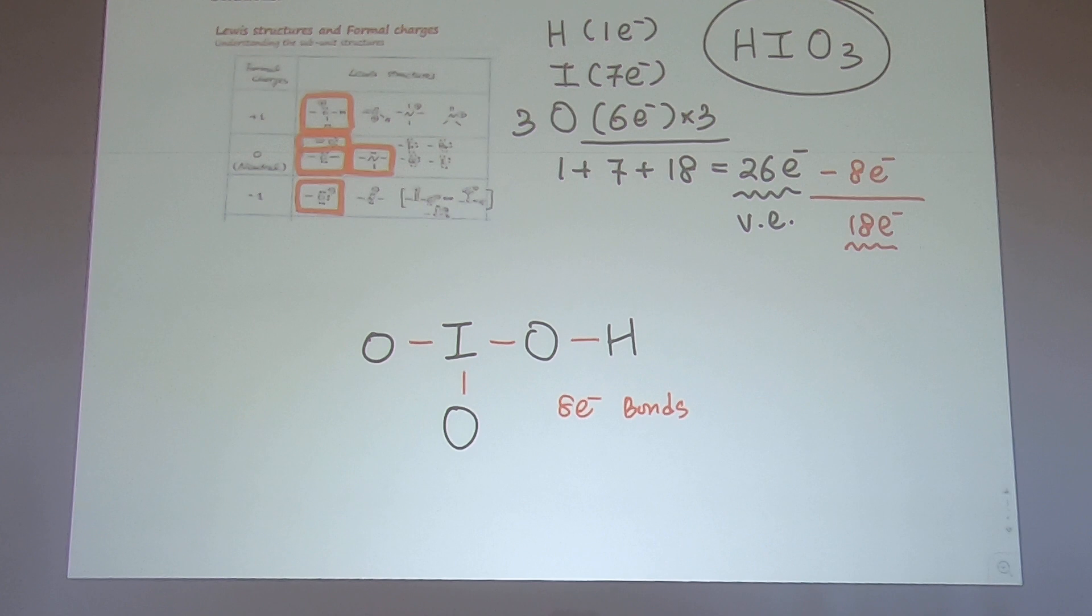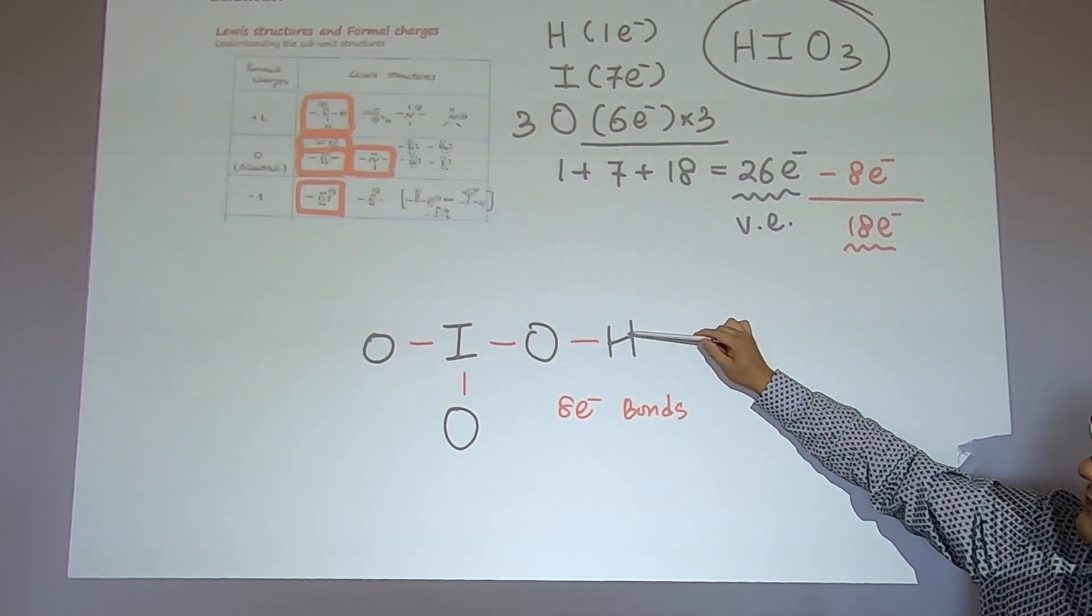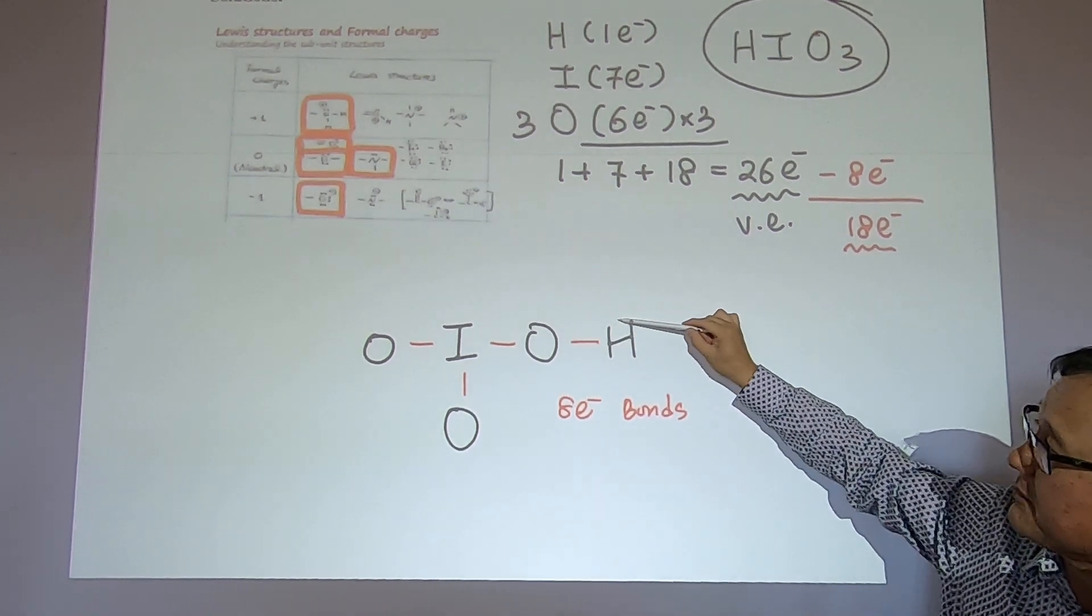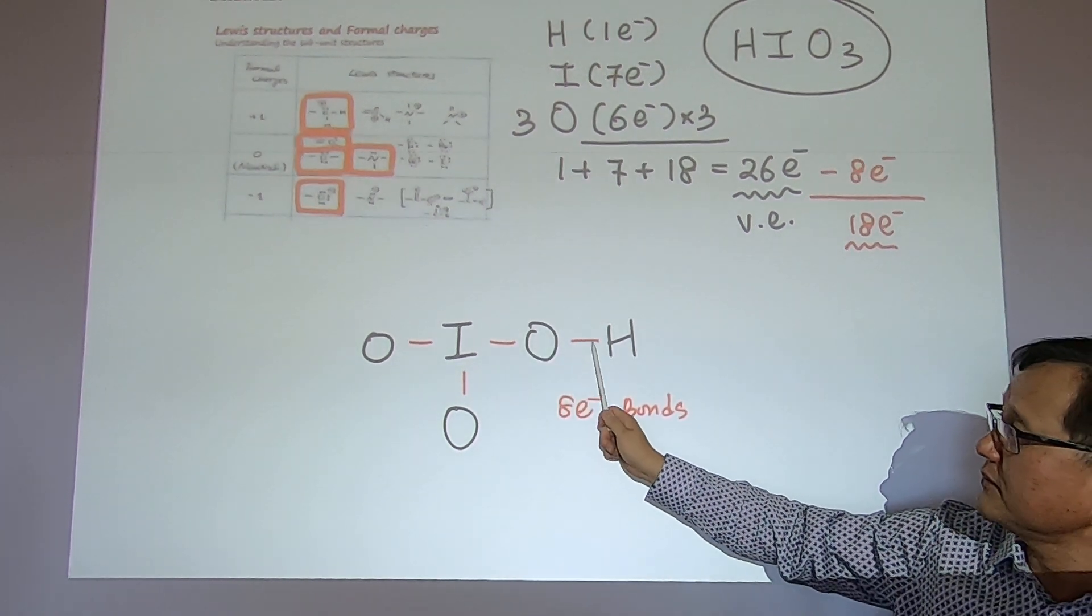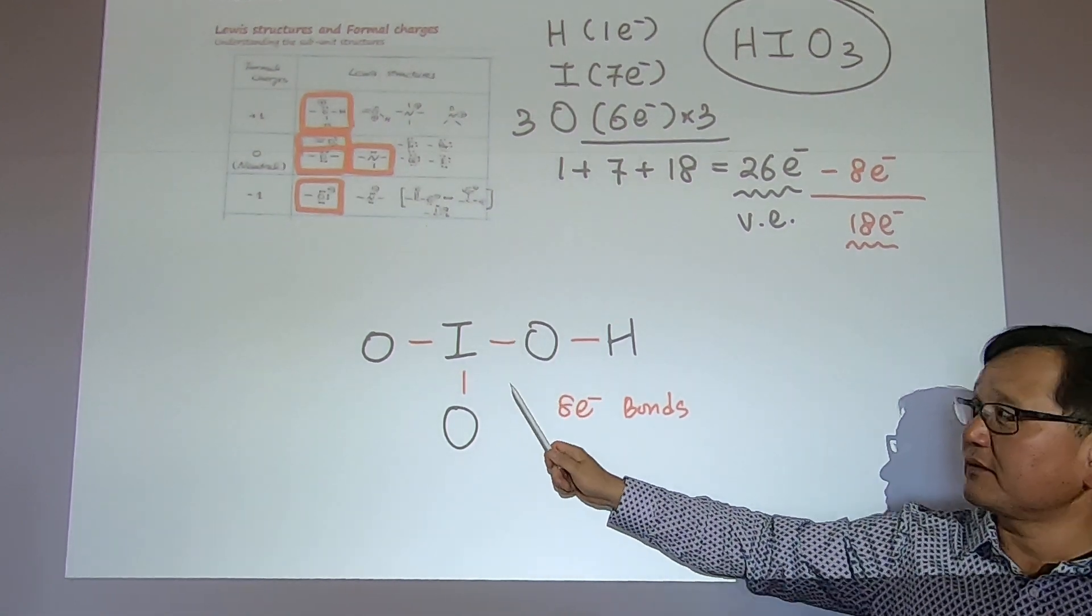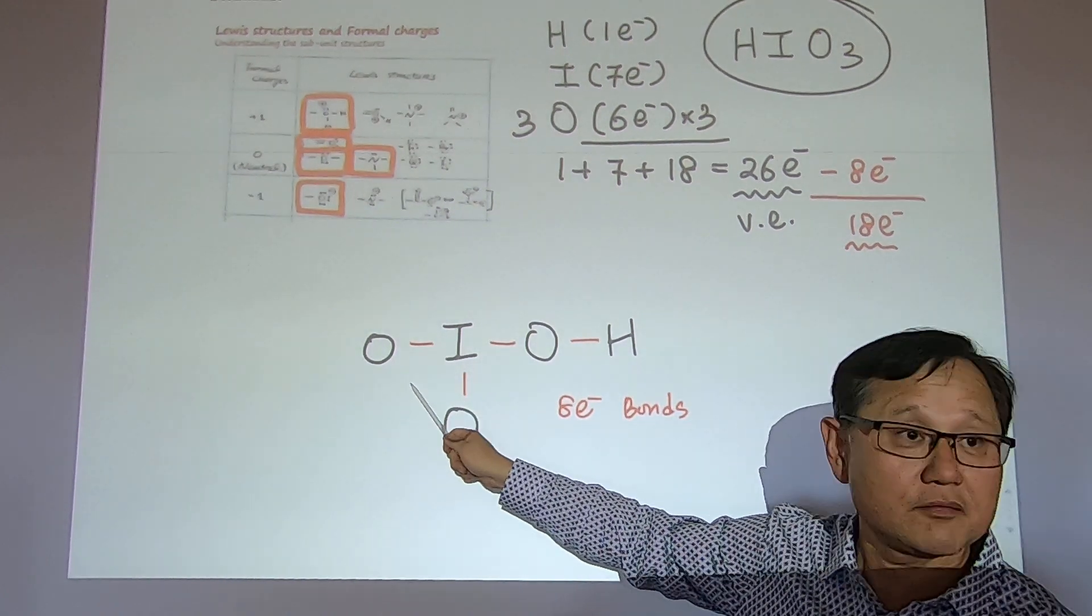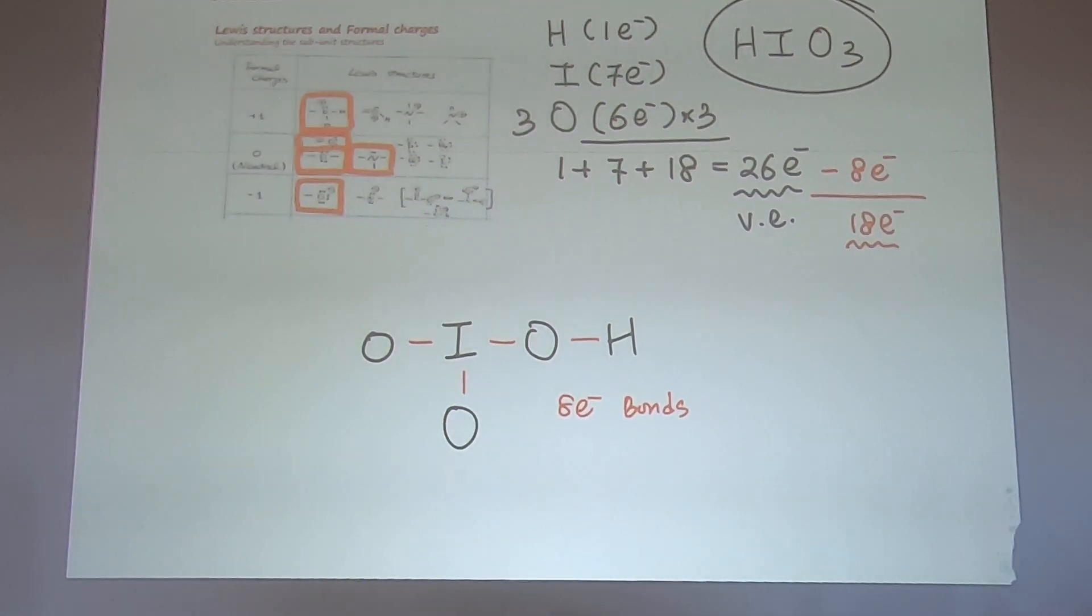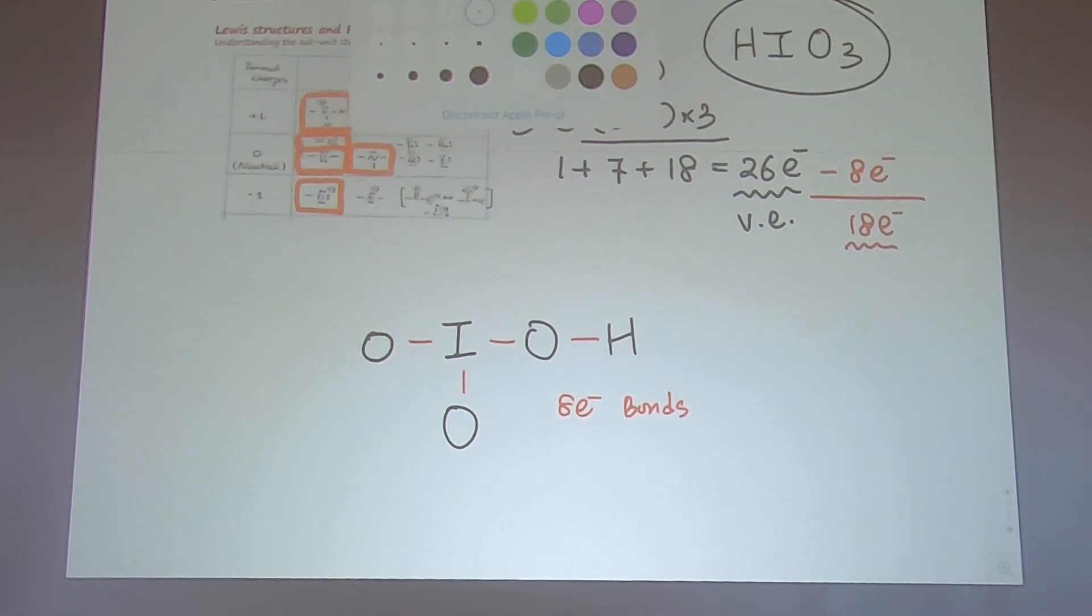Then I have to make everyone happy. What I mean is satisfy octet rule. I guess this is an exception to the octet rule. And this one feels like they have two electrons belonging to them, so they are happy. But what about this oxygen? One, two, three, four. You need four more electrons. This one, I feel like having two electrons. So I need three more pairs of electrons, six electrons. Let me do this on a piece of paper.